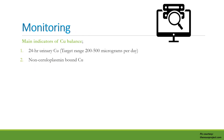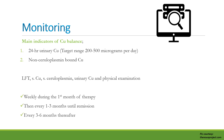The main indicators of copper balance for monitoring treatment are: first, 24-hour urinary copper with a target range of 200–500 mcg/day; and second, non-ceruloplasmin-bound copper, which is the secondary treatment target. One must also monitor LFTs, serum copper, serum ceruloplasmin, urinary copper, and physical examination — weekly during the first month of therapy, then every 1–3 months until remission, and every 3–6 months thereafter.